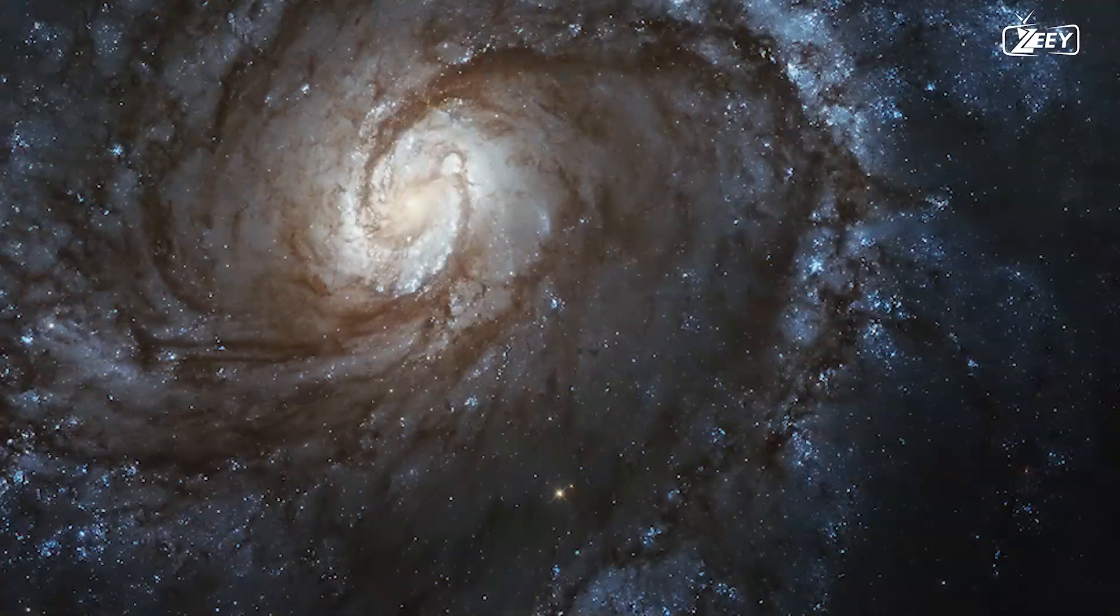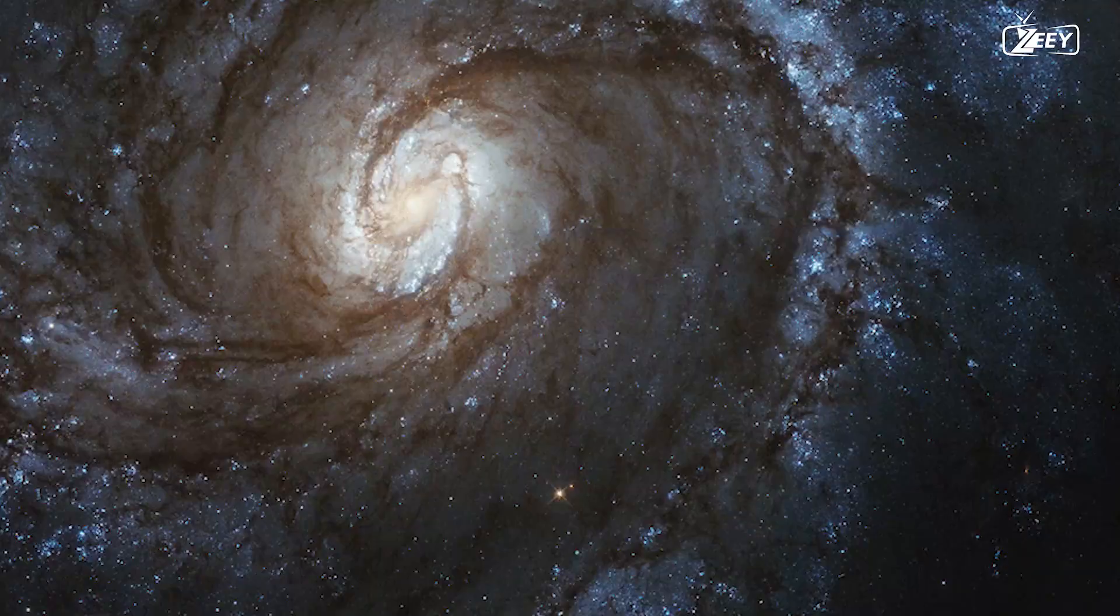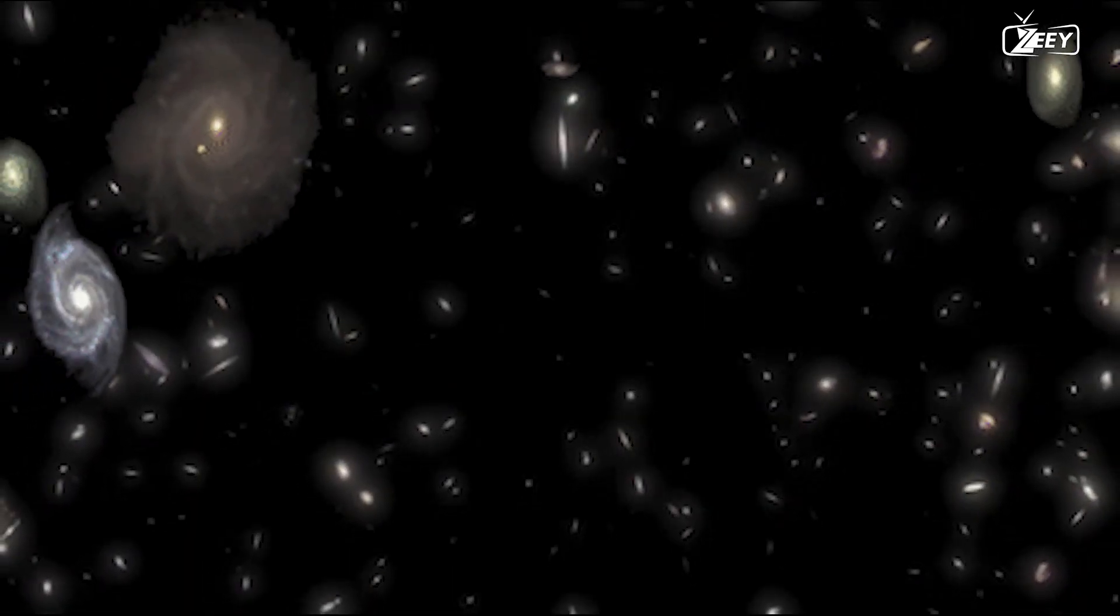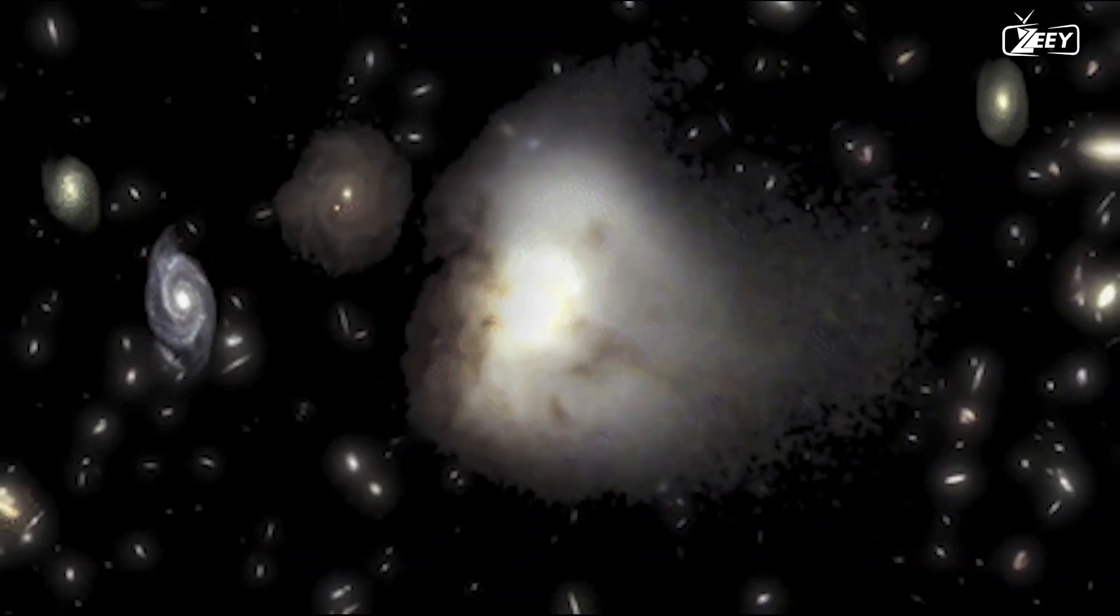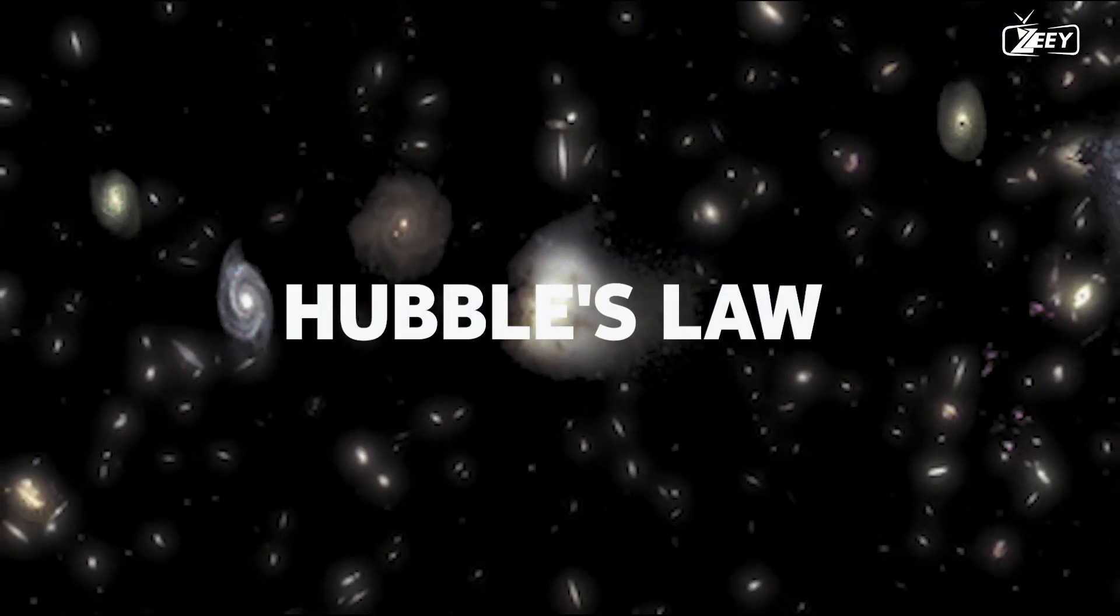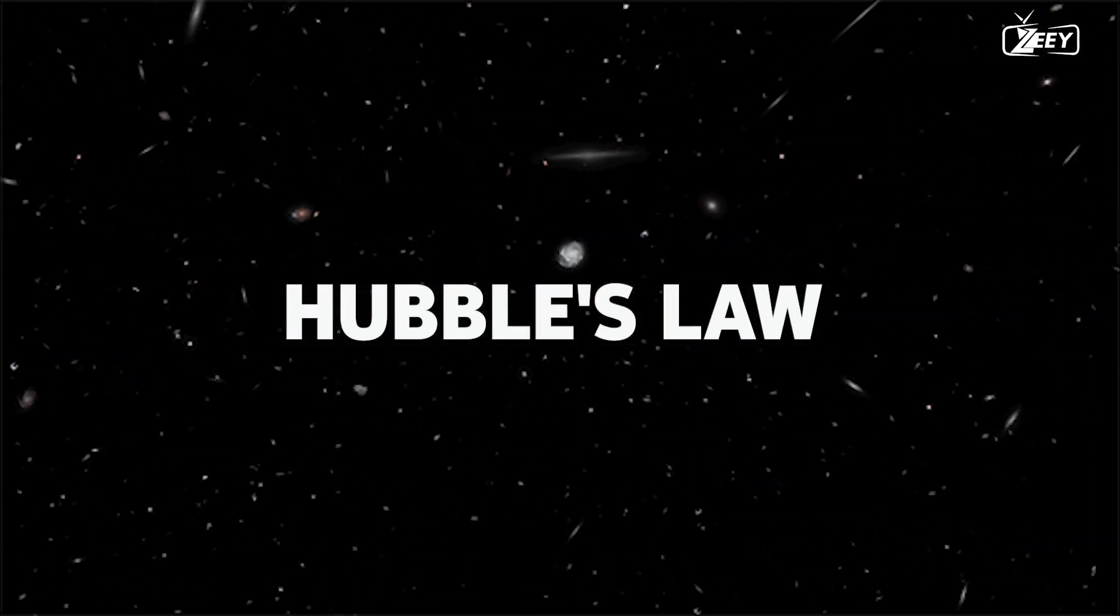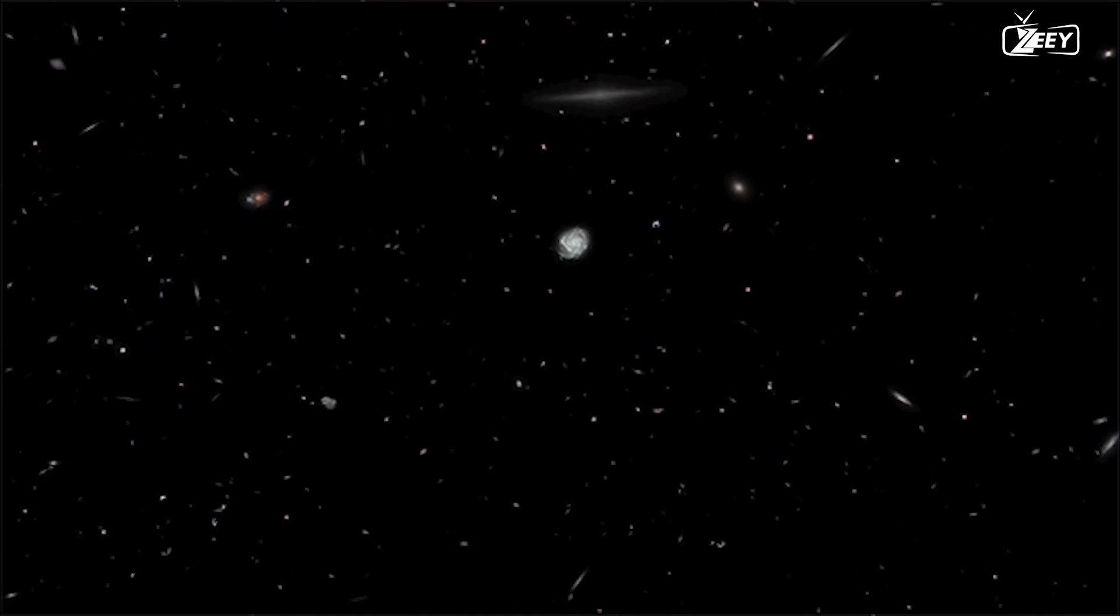But Hubble found a pattern while studying the far-off galaxies. He observed that the recessional velocity of a galaxy is inversely proportionate to its distance. This implies that galaxies travel away from us more quickly the more distant they are from us. Hubble's law is the name of this rule. Although this relationship seems straightforward, it contains one of the biggest mysteries in the cosmos.